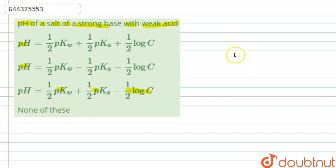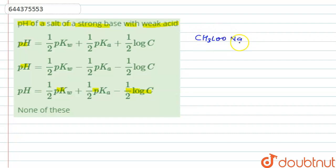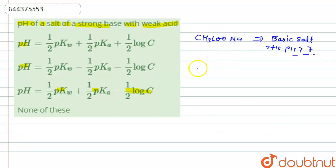The fourth option is 'none of these.' We have to calculate the pH of a salt of strong base and weak acid. For example, CH₃COONa — this is the salt of a strong base and a weak acid. This is a basic salt, and its pH is greater than 7.